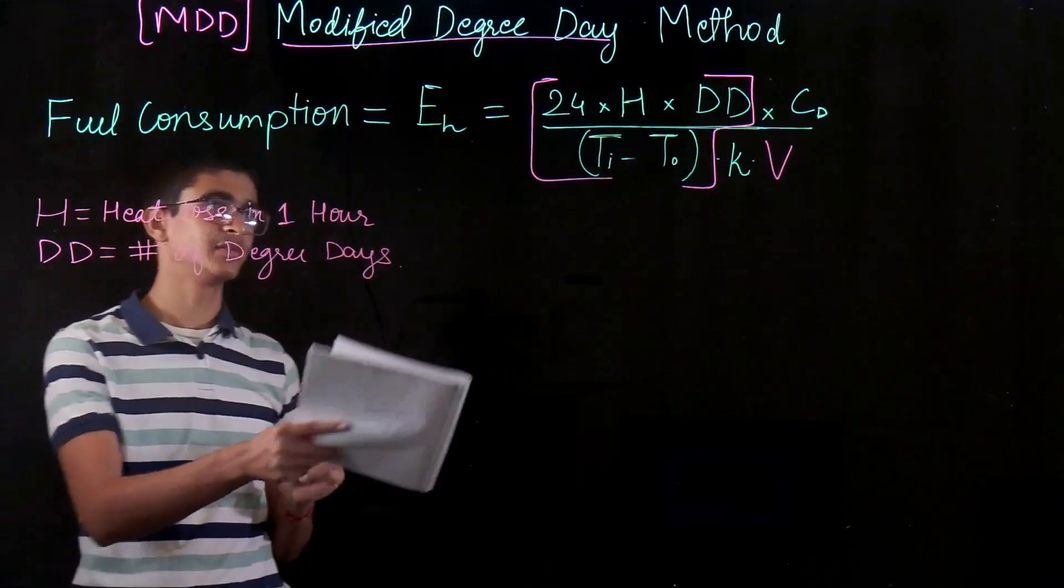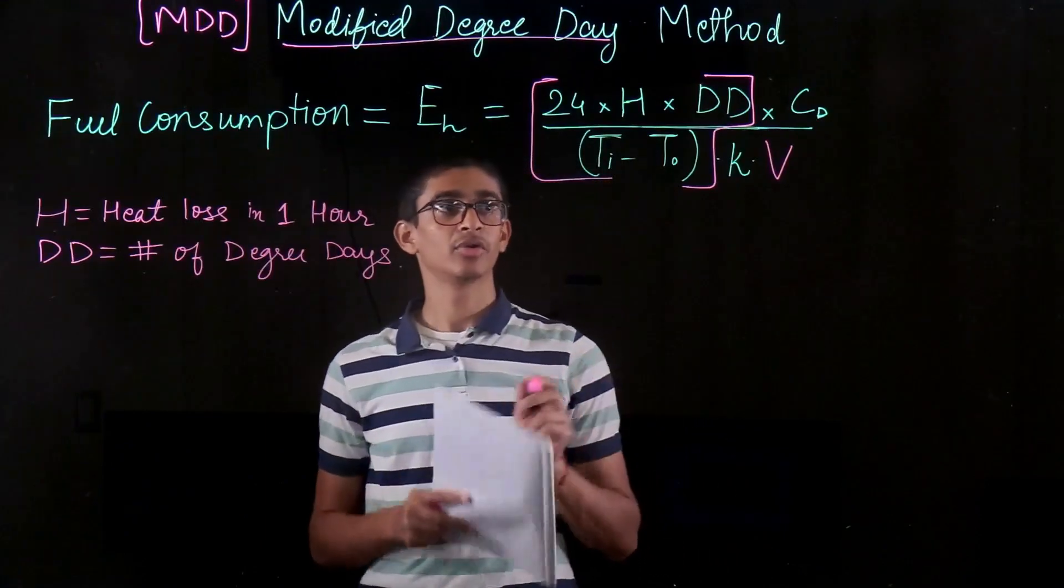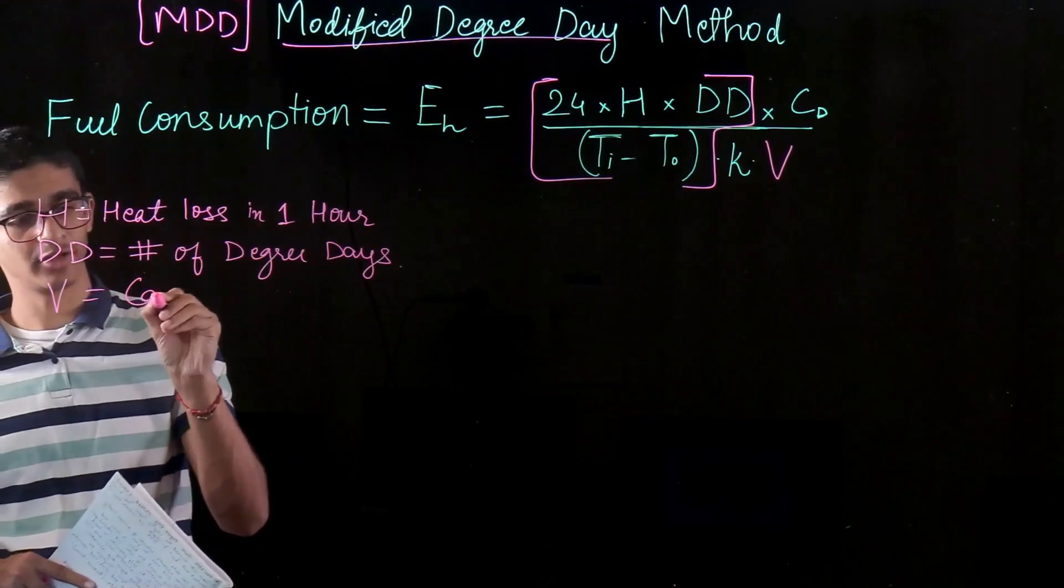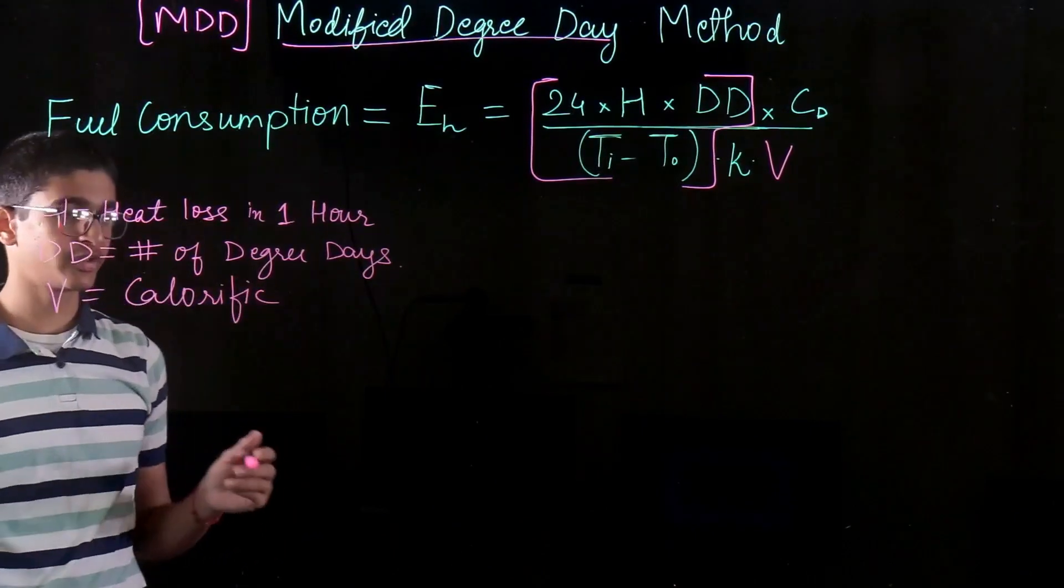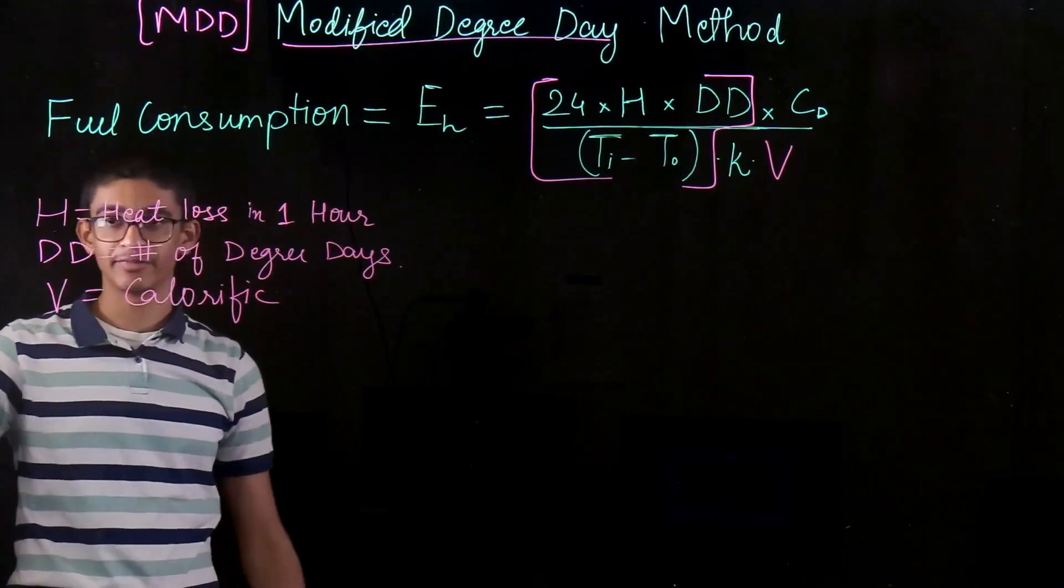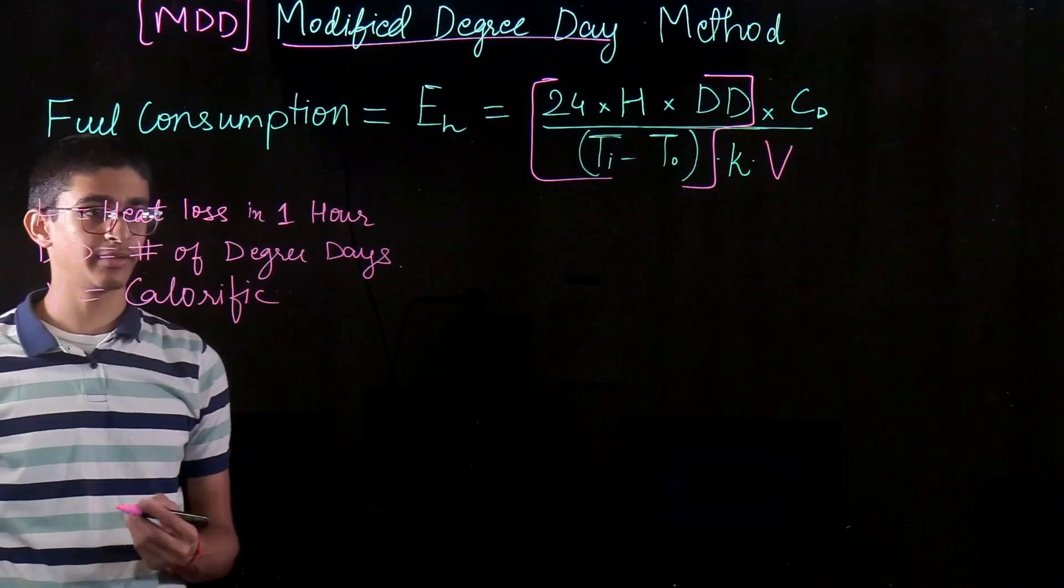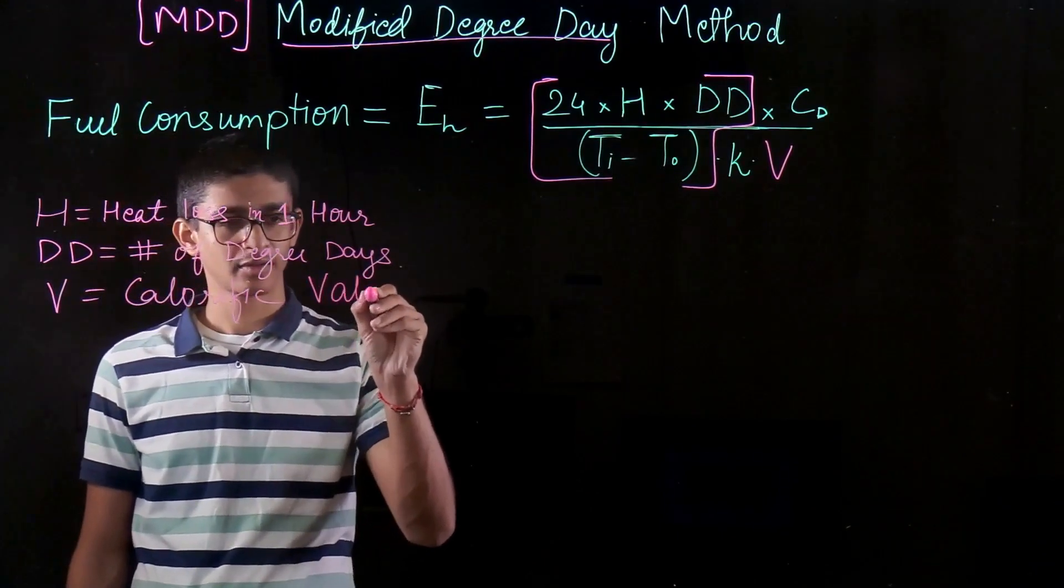TI and TI out are very simple. TI is the indoor temperature, TI out is the design outdoor temperature. While V is again the calorific value of the fuel. And I am very sorry but there are different notations used at different sources, so it's very difficult to maintain the same notation for that calorific value of the fuel.